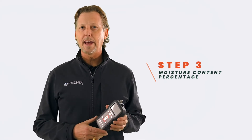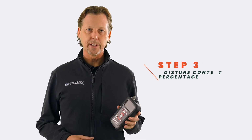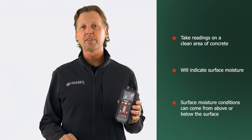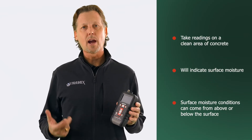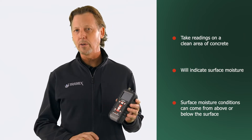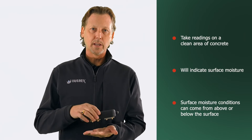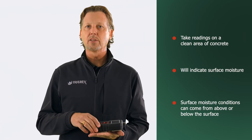The third point we're looking at is the percentage of moisture content in the top three-quarter inch of the slab. We're doing this using our concrete moisture encounter pressed to the surface of the concrete. We want to make sure that it's a clean, dry surface, free of any drywall mud, paint — any coating on that surface needs to be removed so we can get a good indication of moisture.